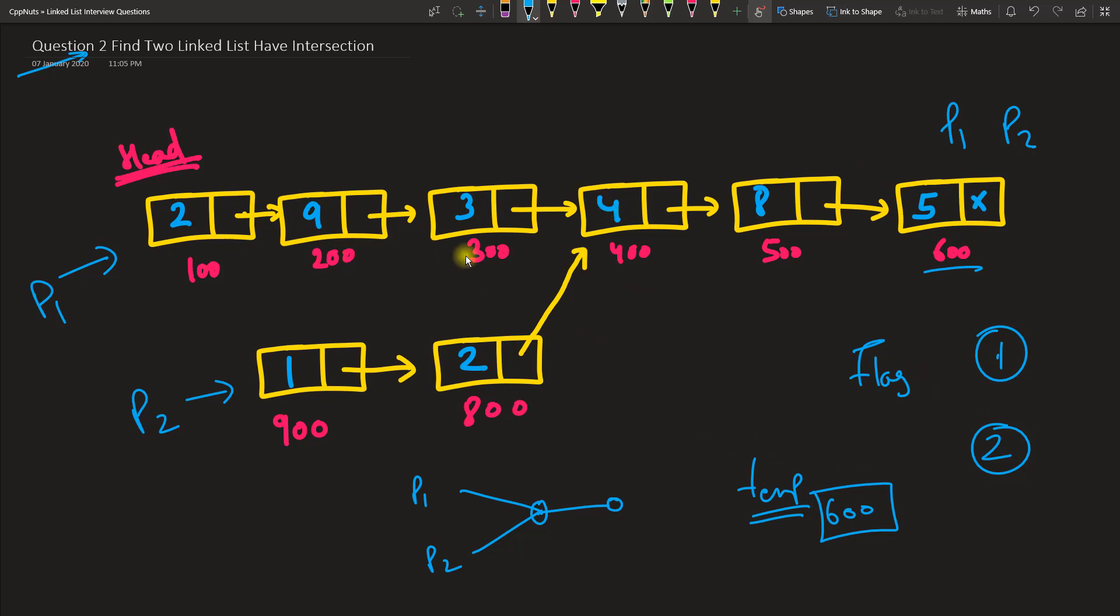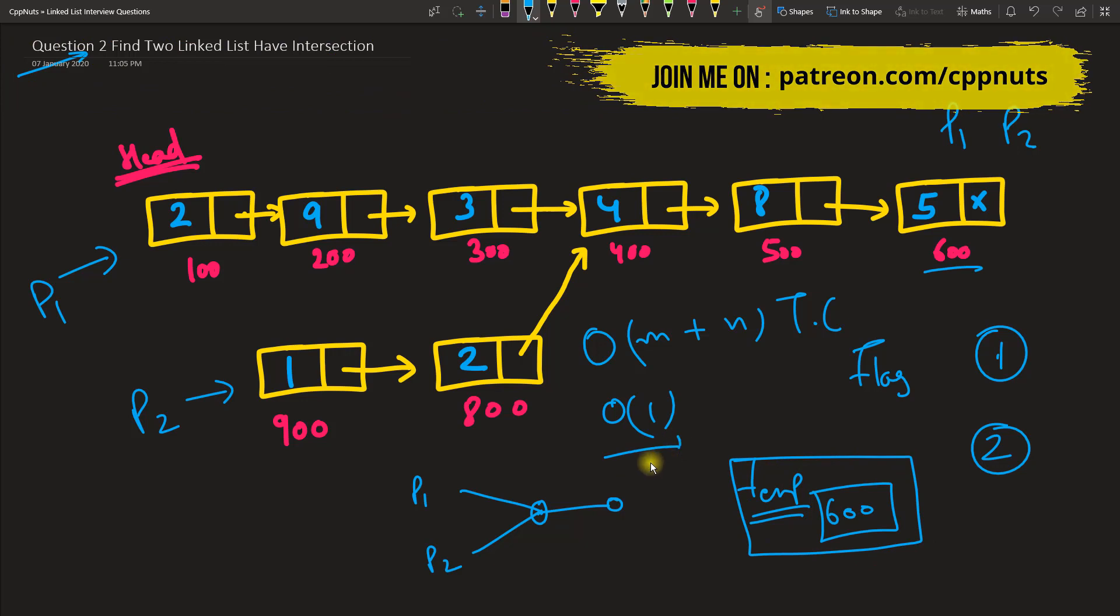This solution I like very much and it has very good complexity. This is order of m plus n, so this becomes the time complexity. The space complexity is always one because you are always having p1 on the same linked list and p2 on the same linked list, and we are using one extra space, so we can say that it is constant space-time complexity.